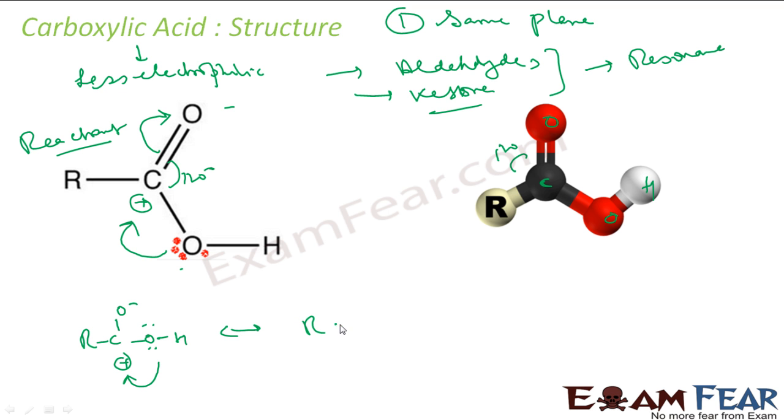And now oxygen gives electron to this carbon, so oxygen gets positive charge. Since the electron flows from here to here, it gets a double bond, correct? Because the electrons are flowing from here to here, and carbon-oxygen is still with a negative charge, and there is an H.